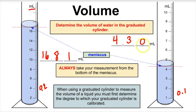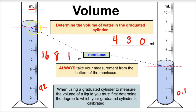So when using a graduated cylinder to measure the volume of a liquid, first determine the degree to which your graduated cylinder is calibrated, then go from there. And make sure you always measure from the bottom of the meniscus.